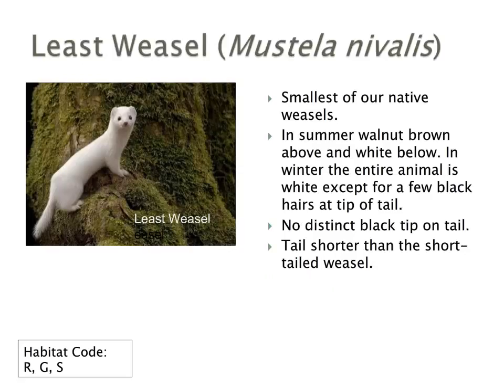The least weasel is the smallest of our native weasels. In the summer, it's walnut brown above and white below. In winter, the entire animal is white, except for a few black hairs at the tip of its tail, which are not even visible. So the short-tailed weasel has a very clearly defined black dot at the end of its tail, and the least weasel does not. The tail is also shorter than the short-tailed weasel.